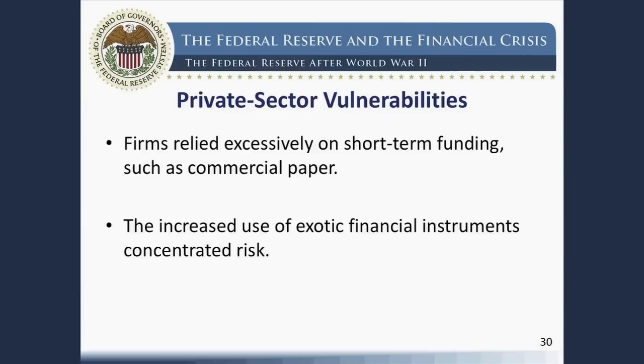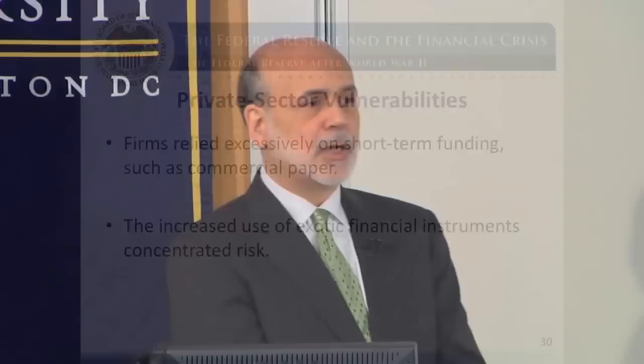A final private sector vulnerability was the use of exotic financial instruments — complex derivatives and so on. An example was the credit default swaps employed by the AIG Financial Products Company. AIG used credit default swaps essentially to sell insurance to investors on complex financial instruments, promising that if investors lost money on collateralized debt obligations or similar products, AIG would make good. As long as the economy was doing well, they were just collecting premiums on this insurance with no problem. But once things went bad, being on one side of all these bets meant they were exposed to enormous losses with very serious consequences.